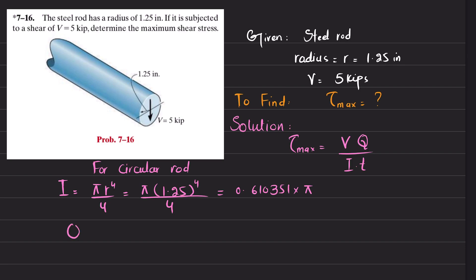We know that Q is equal to A times ȳ. Now if this is the circular portion, and this is the neutral axis, we will take the upper half portion, the semicircle.